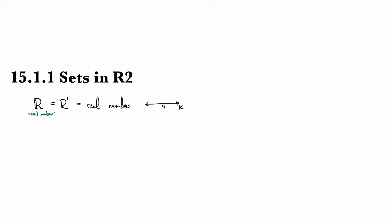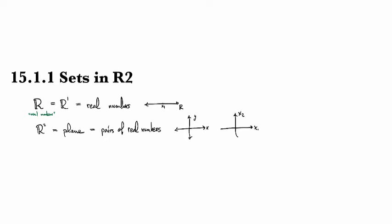We'll also have R². This is the plane, and it consists of all pairs of real numbers. That little 2 indicates that there are two coordinates, and we've got X and Y — or quite often we'll call them X₁ and X₂.